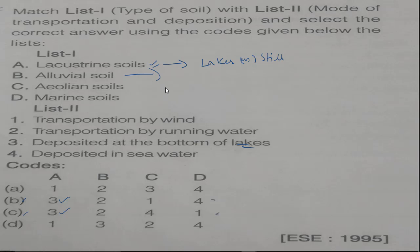Next one, alluvial soils. Alluvial soils are deposited by river or flowing water. So B should be 2. Again, B or C will be the answer.